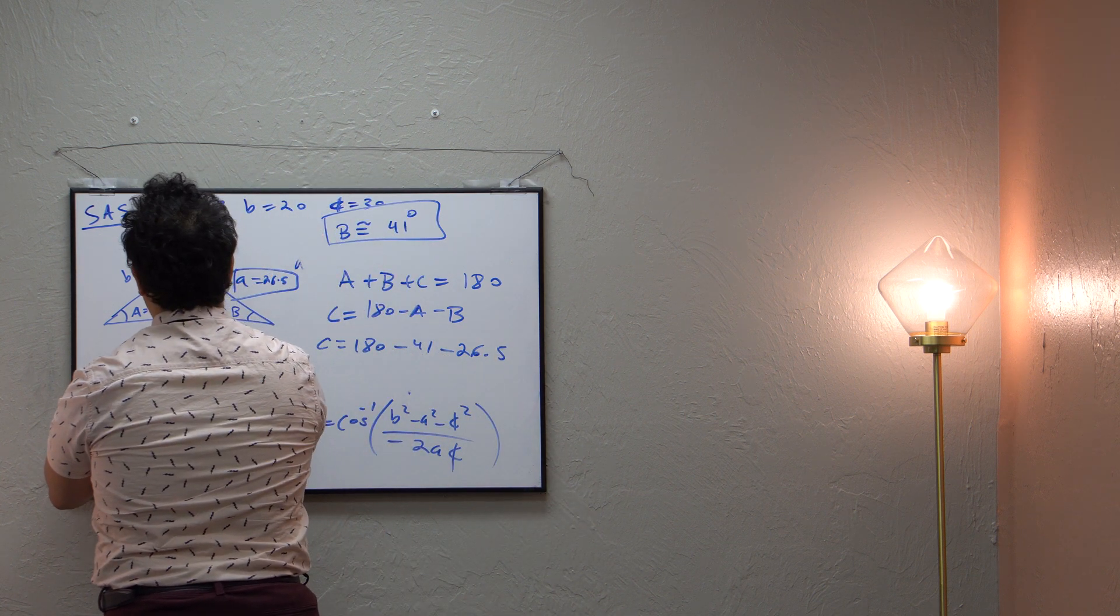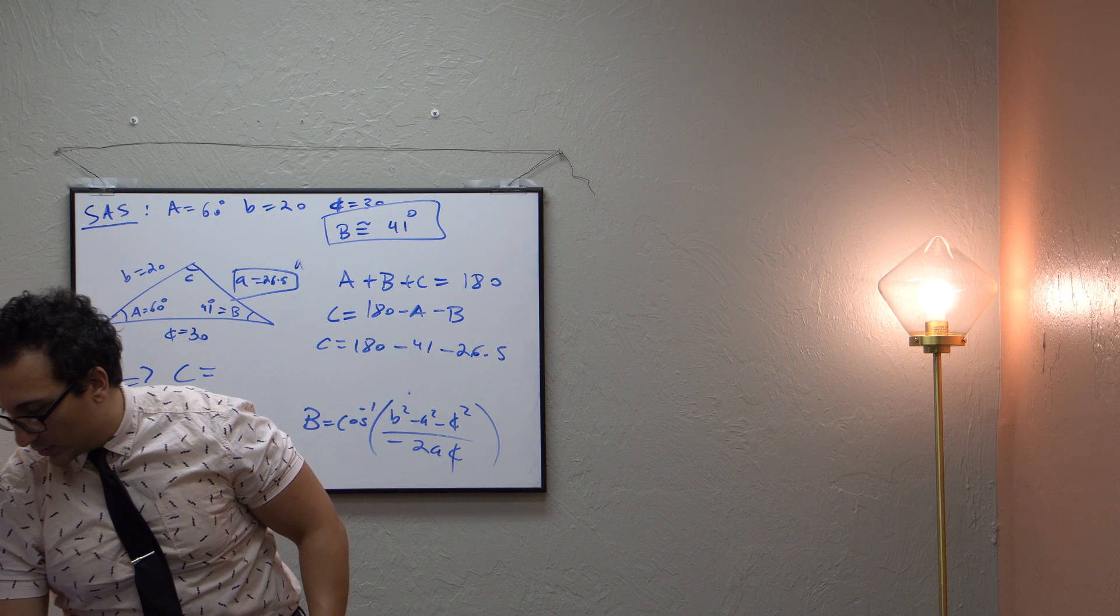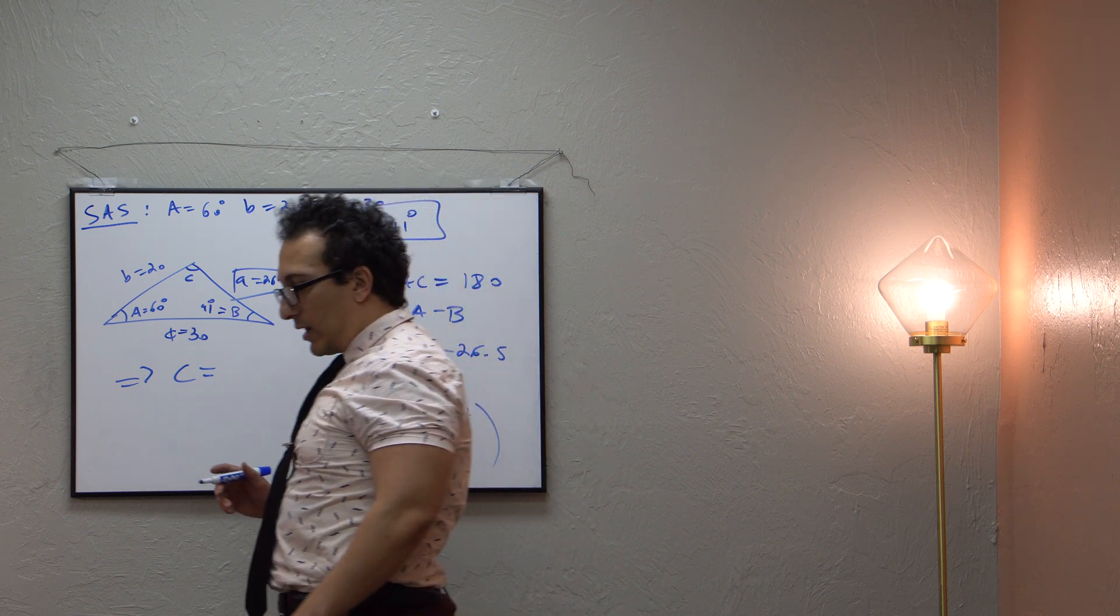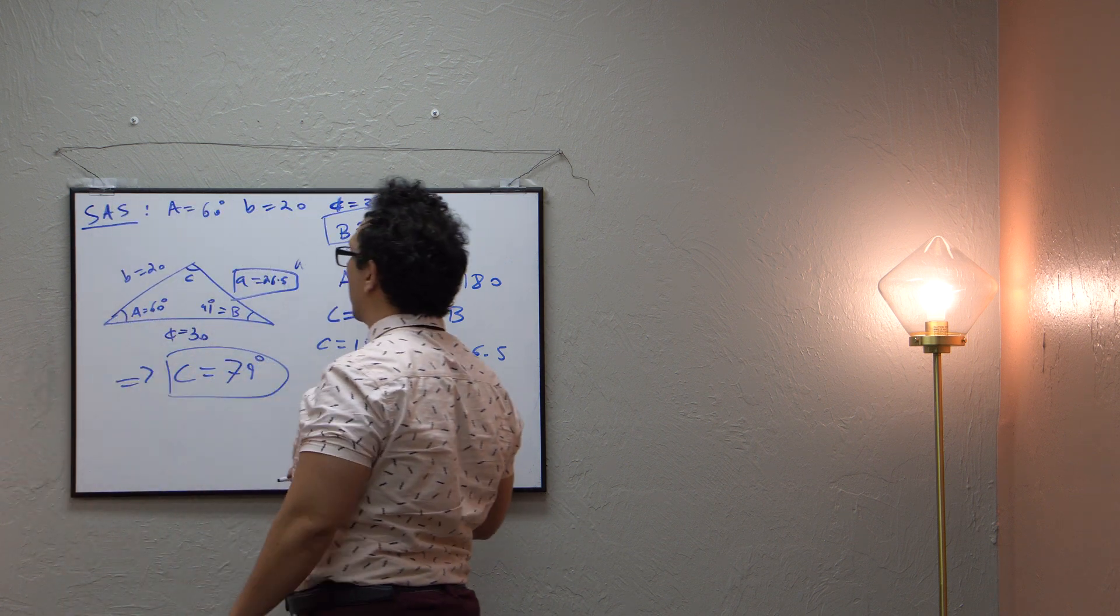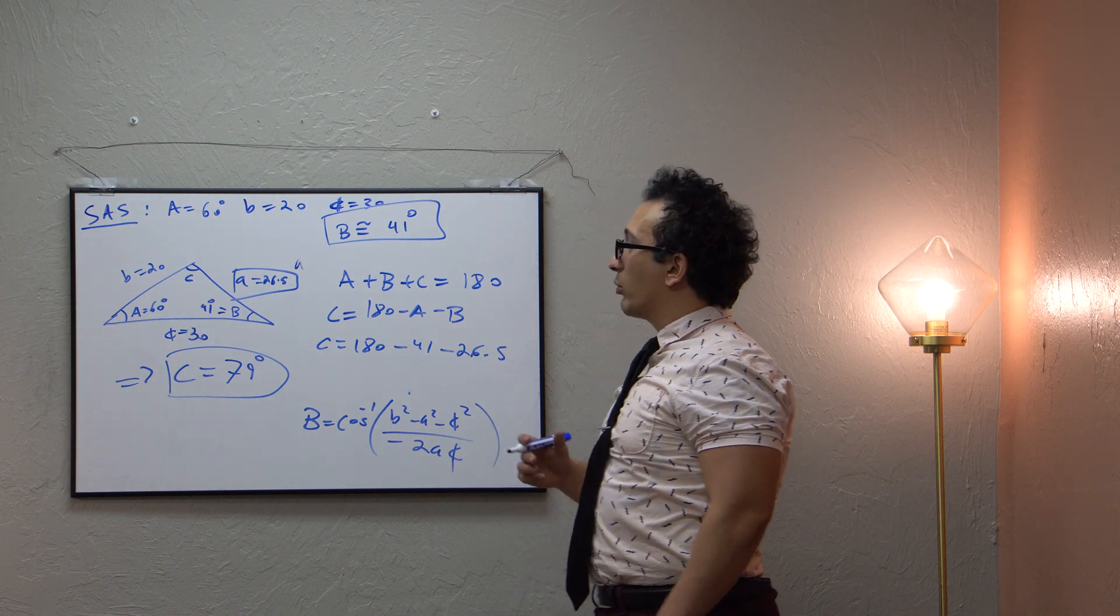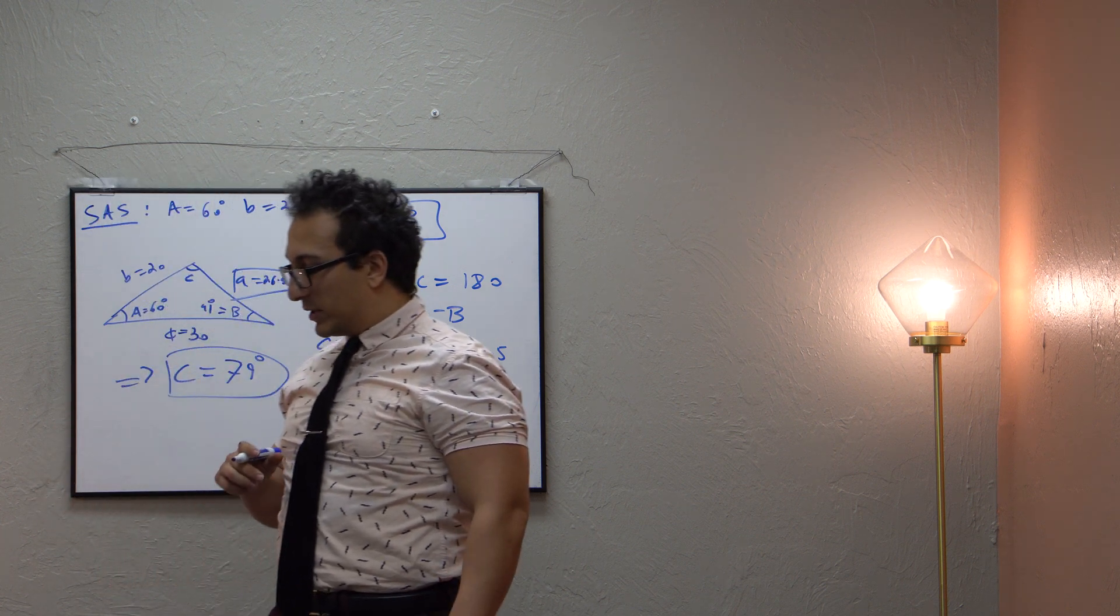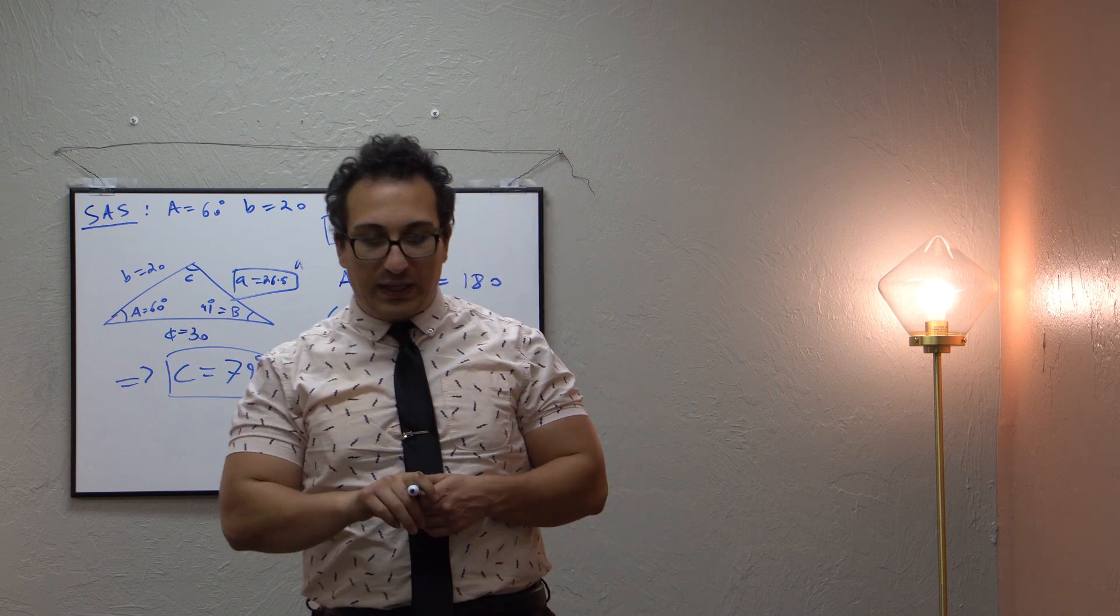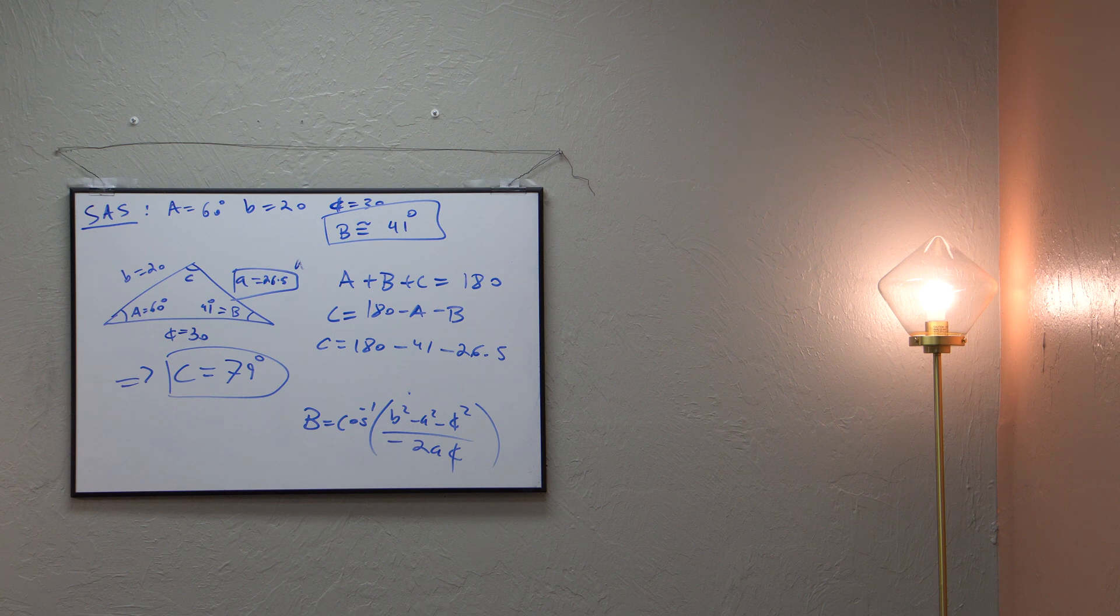So this implies that our last unknown, capital C, is equal to, let's plug it into our calculator here. We get that it equals 79 degrees. And you can add 79 to 41 to 26.5. And you'll approximately get 180. You might be 0.05 short or something like that. But that's only because we had the approximate. If we didn't approximate, it would perfectly add up to 180 degrees.